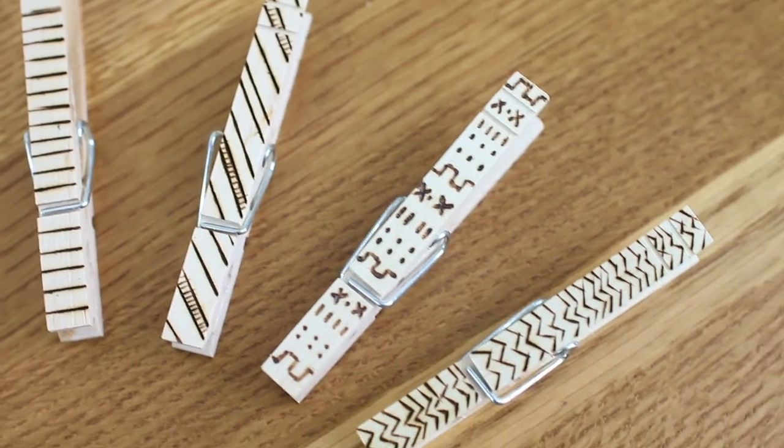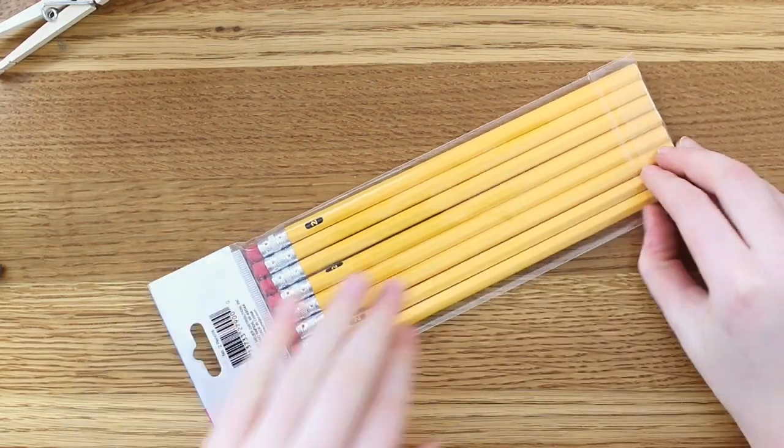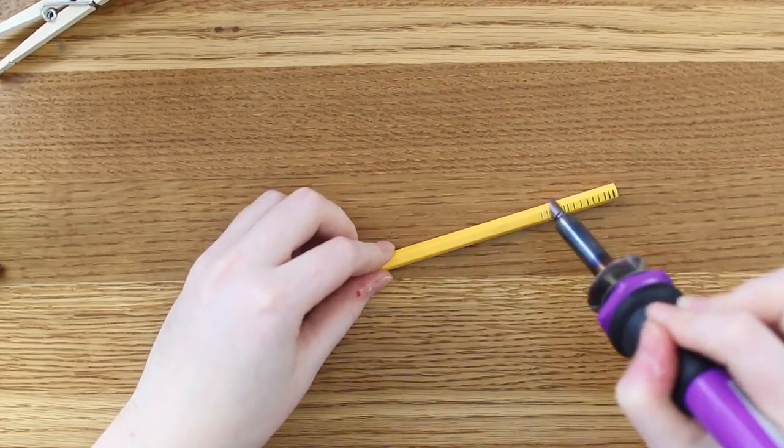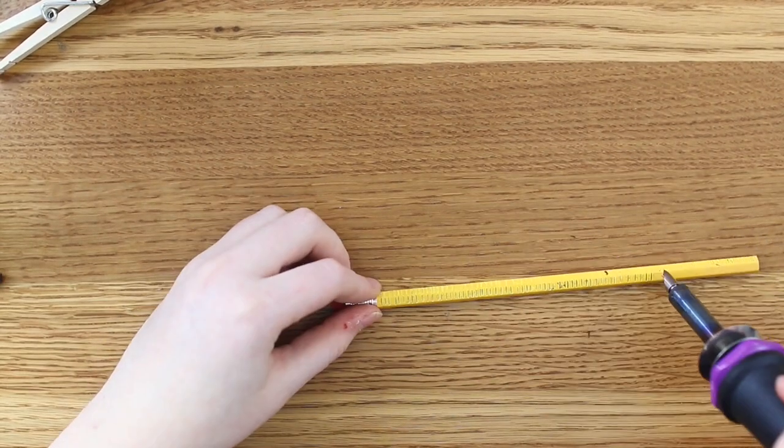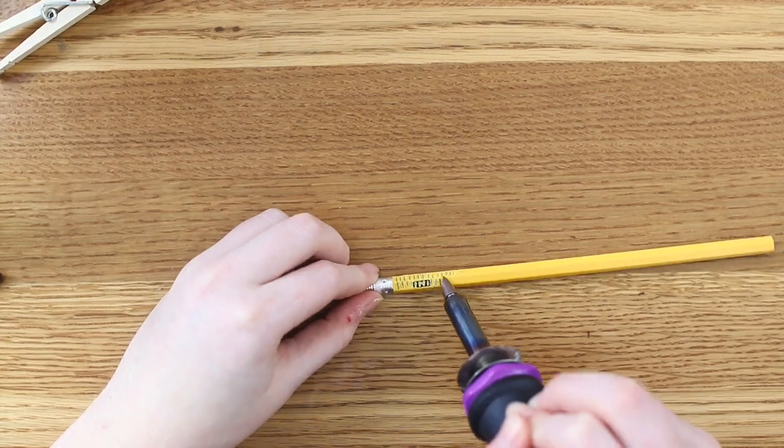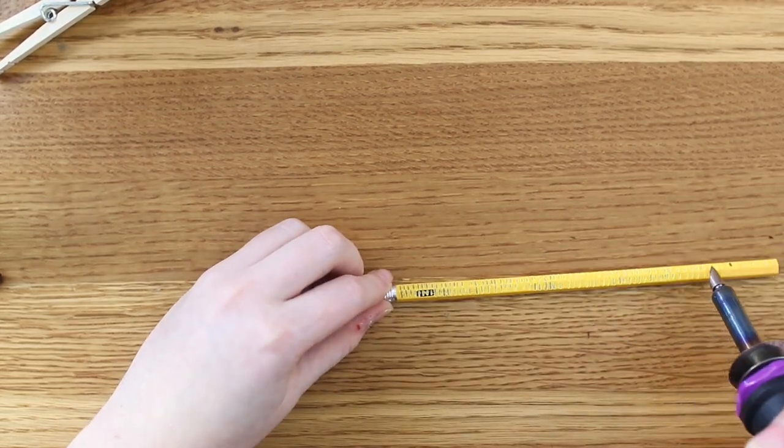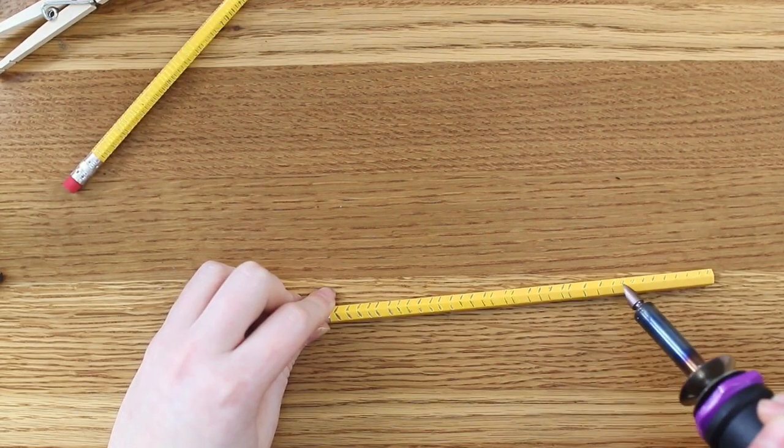This is how the clothespins turned out. Then I did some pencils, and I should have done just full-on wooden pencils because the plastic around the whole thing, first of all, gave a terrible smell to the room because it's like burning plastic.